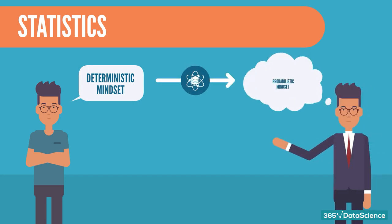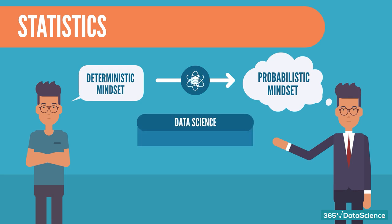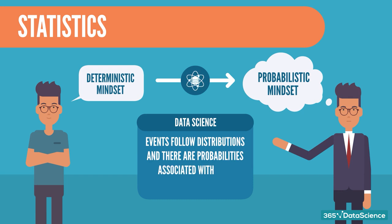but to be a data scientist, you need to shift to a statistical, or even better, a probabilistic mindset. Why? Well, because of how data science works, events follow distributions, and there are probabilities associated with each possibility. So that's a whole new way of thinking to adapt to.